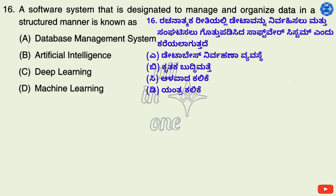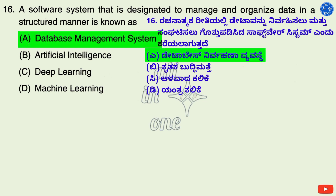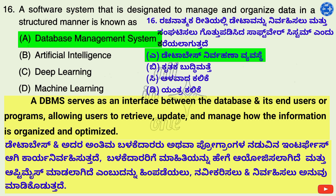Question 16. A software system that is designed to manage and organize data in a structured manner is known as — Options: A. Database management system, B. Artificial Intelligence, C. Deep Learning, D. Machine Learning. Right answer is A: Database management system. A DBMS serves as an interface between the database and its end-users or programs, allowing users to retrieve, update, and manage how the information is organized and optimized.